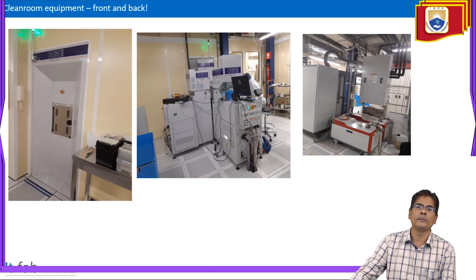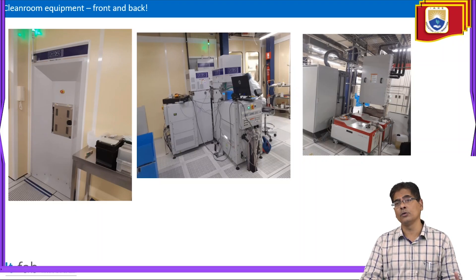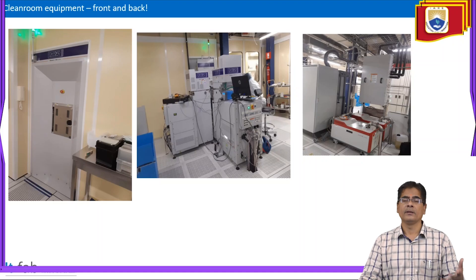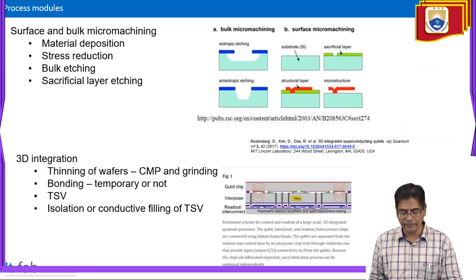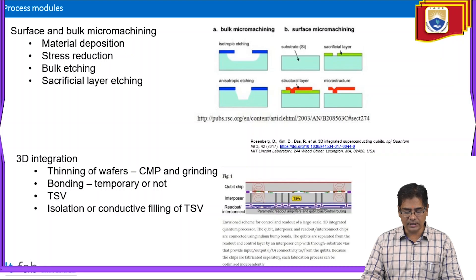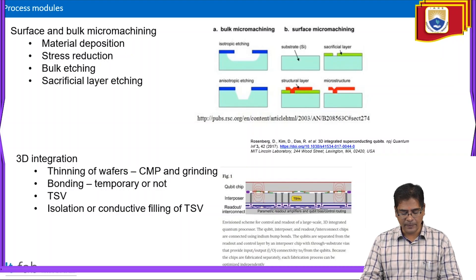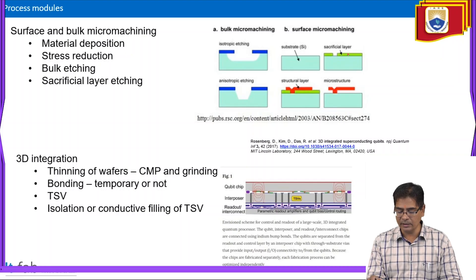These are the machines used to fabricate thin film nanostructures to obtain device miniaturization. Clean room equipment and process modules include surface and bulk micromachining, material deposition, stress reduction, bulk etching, and sacrifice layer etching. For 3D integration: thinning of wafers via CMP and grinding, bonding, TSVs, and isolation or conductive filling of TSVs.